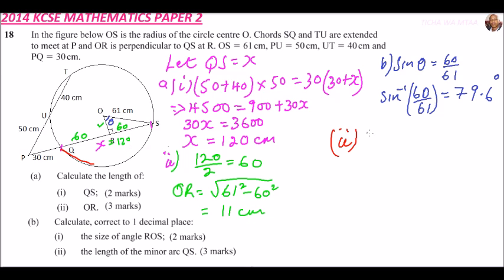So how do we get the arc length? Arc length equals θ over 360 multiplied by 2πr. So that is the formula that we use. Now the angle that we are going to use, we can call it θ2.